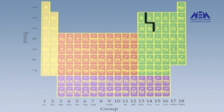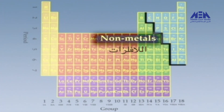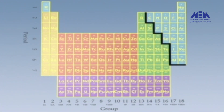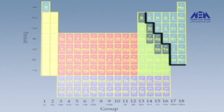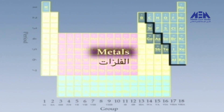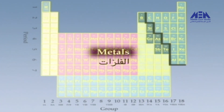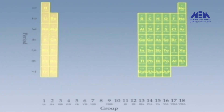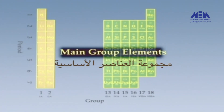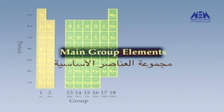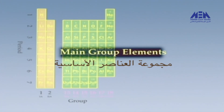A zigzag line can be drawn diagonally across the right-hand side of the table, like this. Non-metals are the elements to the right of this line, together with hydrogen. Along the zigzag line are a group of elements with some metal-like qualities, known as the metalloids. All the rest of the elements in the periodic table are metals. Chemists often have reasons to examine the table without reference to the broad swath of the transition elements and inner transition elements — this abbreviated form is called the main group elements.